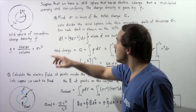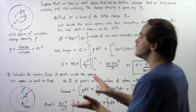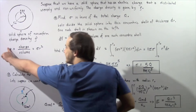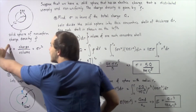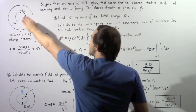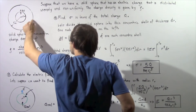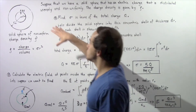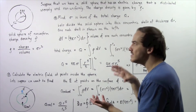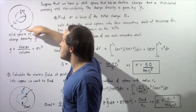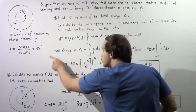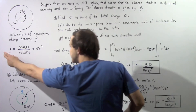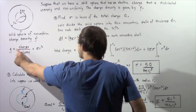For part A, we want to find charge in terms of density. The charge of one concentric shell equals the density of that shell multiplied by its volume. To find the total charge of the entire sphere, we integrate — summing up the charges of all the concentric shells. So total charge q equals the integral of density times dV.